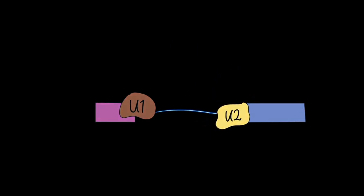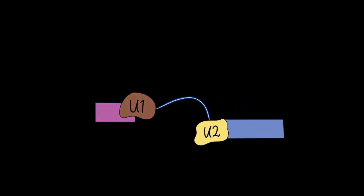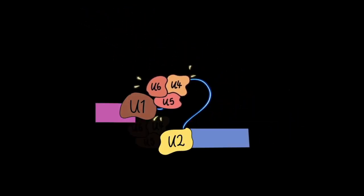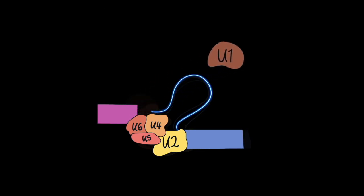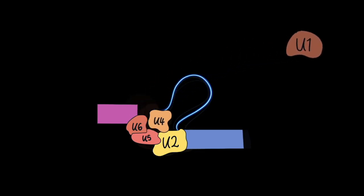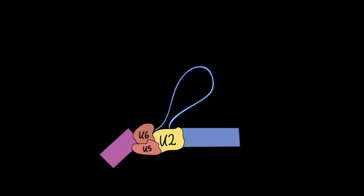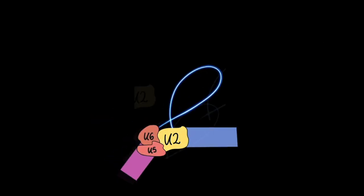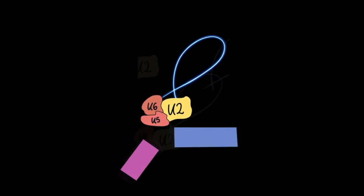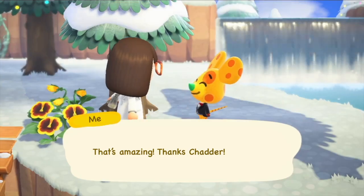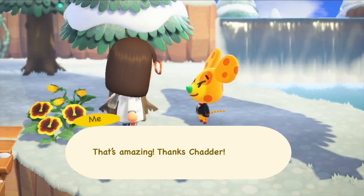U1 and U2 recognize and bind, while other proteins join the party to help unwind and bend the correct sides into position. This rearrangement optimizes the conformation required for the splicing reaction to occur. The regions are cleaved by consecutive transesterification reactions where the ends join back together after the spliceosome is released. That's amazing. Thanks, Chadder.